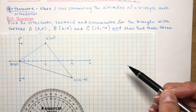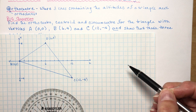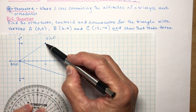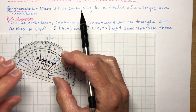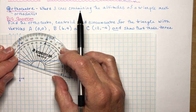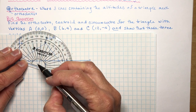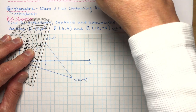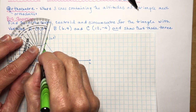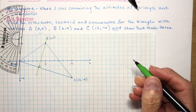Just like with the centroid and circumcenter, we need to find the equations of two lines so we can find where they intersect. An altitude goes from a vertex perpendicular to the opposite side. So from vertex B, I want to draw a line perpendicular to the opposite side AC — that's my altitude from B, meeting the opposite side at right angles.